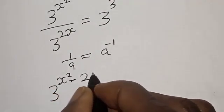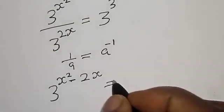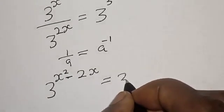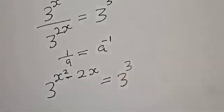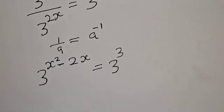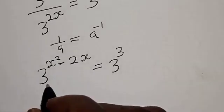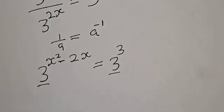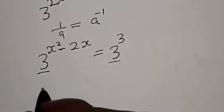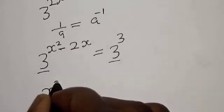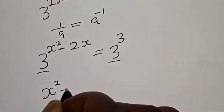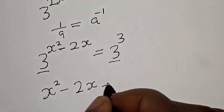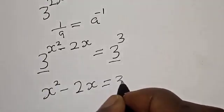We have 3 to the s squared divided by 3 to the 2s equal to 3 raised to power 3. Since they have the same base, we are left with s squared minus 2s is equal to 3.